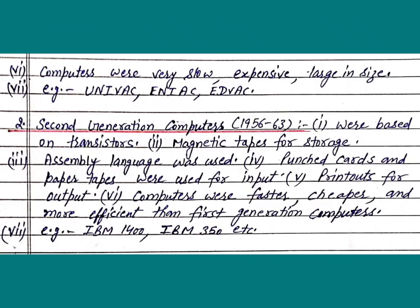Computers were very slow, expensive, and large in size. For example: UNIVAC, ENIAC, and EDVAC.